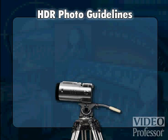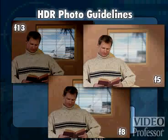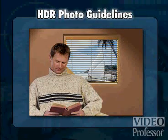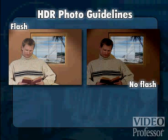Use a tripod to ensure all the photos are identical. To get different exposures in your photos, I suggest varying the shutter speed instead of the aperture. Using the aperture to vary your exposures will produce a different depth of field for each photo, which could result in a lower quality image when you merge the photos. Make sure that nothing is moving in your photo area, and keep the lighting consistent throughout all the photos. For example, don't use a flash in some shots and not in others.